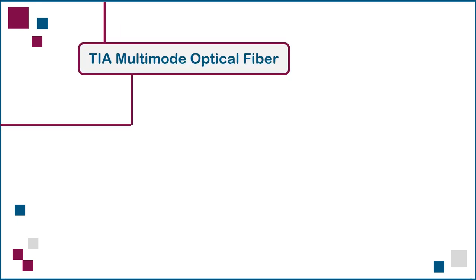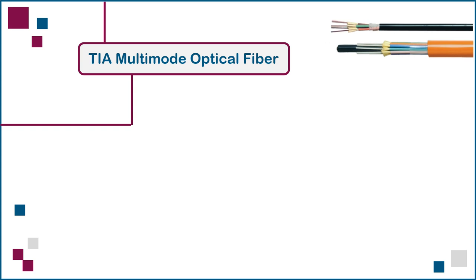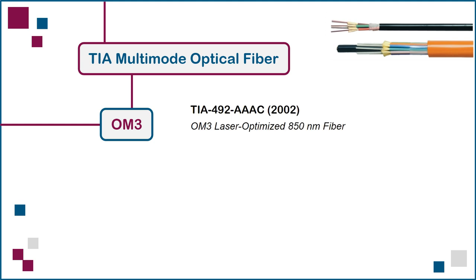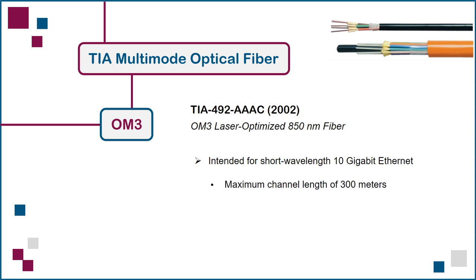Next is a summary of TIA standards for multimode optical fiber. OM3 was first defined in 2002 in TIA 492-AAAC — the first standard for laser-optimized 50-micron multimode fiber, intended for short-wavelength 10 Gigabit Ethernet. Using OM3 multimode fiber, a 10 Gigabit Ethernet channel has a maximum length of 300 meters, compared to 100 meters with Category 6A copper. However, fiber reach is application-dependent; for 100 Gigabit Ethernet, OM3 fiber can only provide a 70-meter reach, 230 meters less than for 10 Gigabit Ethernet.